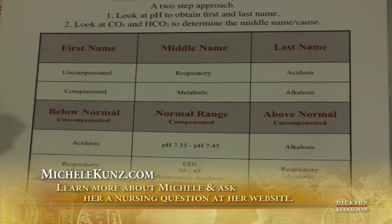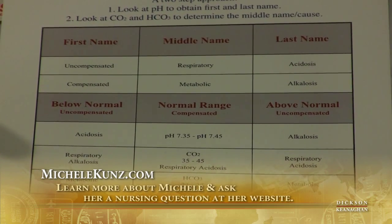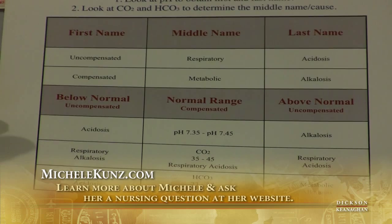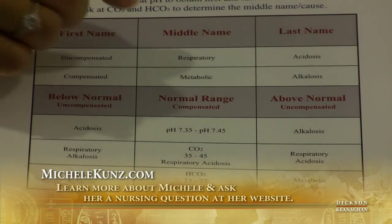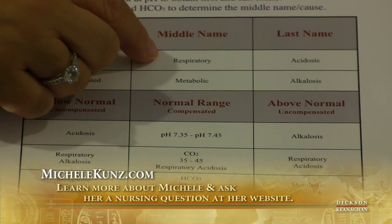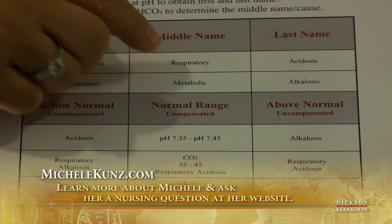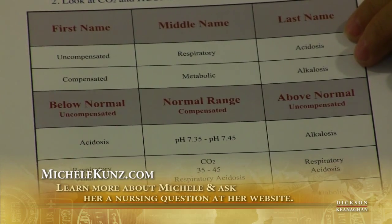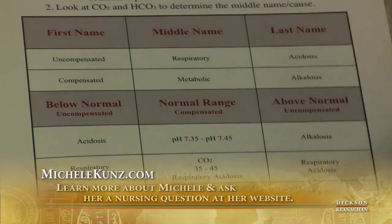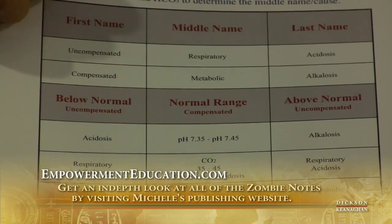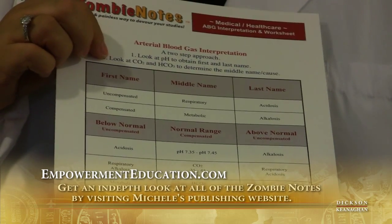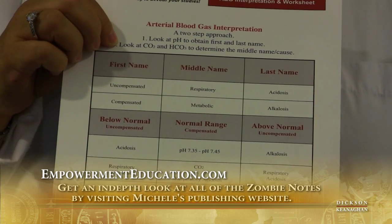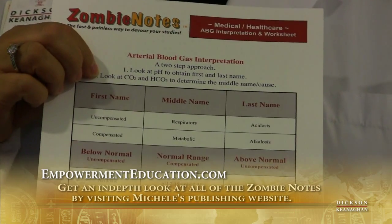The first name is pretty easy — we look at the pH first. That is the rule. We decide whether it's normal or not; the correct terms are uncompensated or compensated pH. The middle name will be what causes the problem — was it the lungs (respiratory) or is it the kidneys (metabolic)? The last name will be whether it's alkalosis or acidosis. So: number one, look at the pH first; number two, look at the CO2 and bicarb to see who caused the problem; and we'll also look to see if the kidneys or lungs are helping compensate.